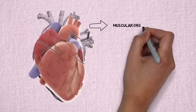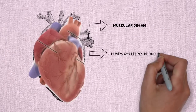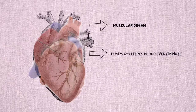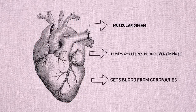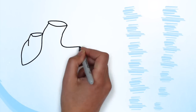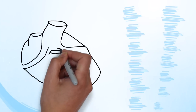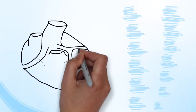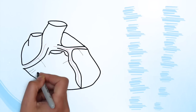The heart is a muscular organ located in the center of the chest, and it pumps six to seven liters of blood every minute to supply nutrients to the whole body. The heart needs its blood from the coronary artery to get its nutrients so that it can work efficiently and continuously.